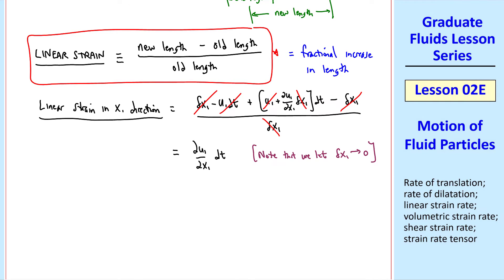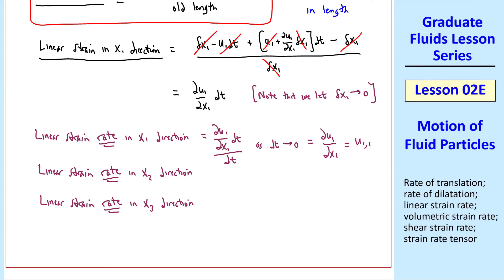Now as I said, we like to deal in rates, not motions themselves. So we define the linear strain rate in the x1 direction as this quantity divided by dt as dt goes to zero. In other words, just del u1 del x1, or in common notation, u1 comma 1.